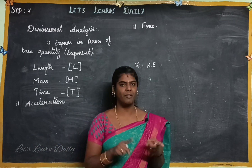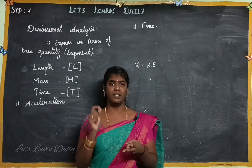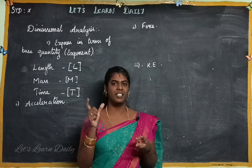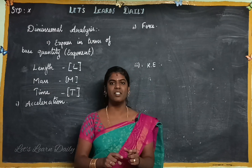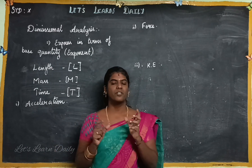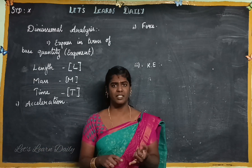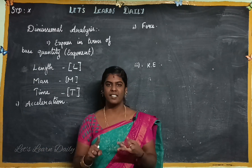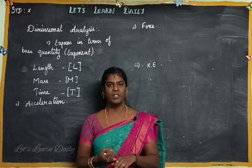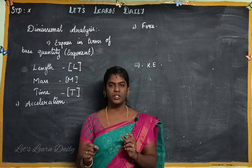The two types are fundamental quantity and derived quantity. The fundamental quantities are the base quantities. There are seven base quantities: length, mass, time, temperature, amount of substance, luminous intensity, and electric current. These are the seven base units.